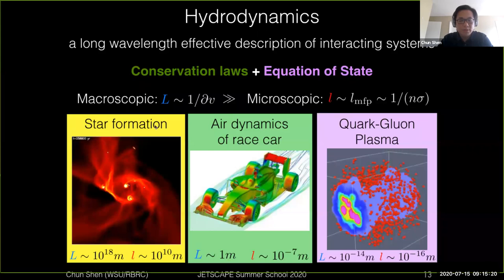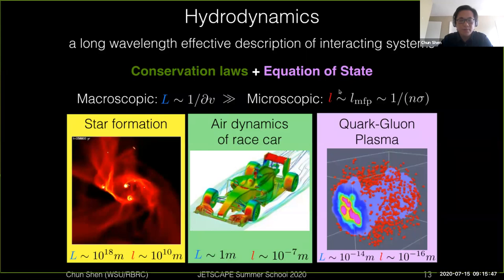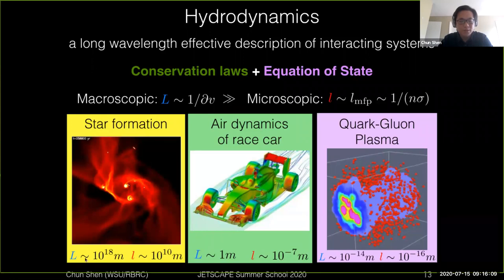Classically, the validity of hydrodynamics relies on a large separation of scales - from microscopic lengths versus the microscopic interactions. The macroscopic length of the system can be estimated as one over the gradient of the velocities, and these macroscopic lengths need to be much larger than the mean free path of the system, which describes the microscopic interactions between particles. Hydrodynamics has been successfully applied to different types of systems - for example, to describe the dynamics of star formations, where the length scale between the system size and the interaction size differs by eight orders of magnitude.